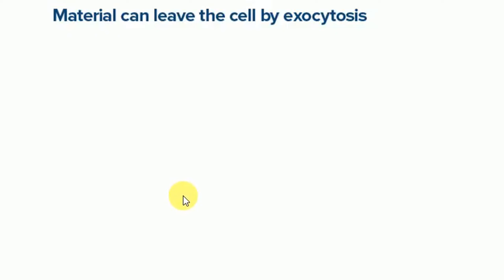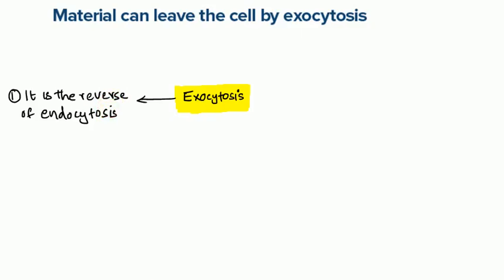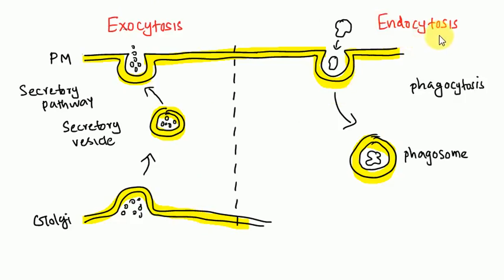Dear friends, we are going to discuss exocytosis. What is exocytosis? It is the reverse of endocytosis. In endocytosis, materials are taken into the cell and form a vesicle. But in exocytosis, there is a discharge of material from the vesicle to the cell surface — the plasma membrane. So this material is discharged from the vesicle to the cell surface.